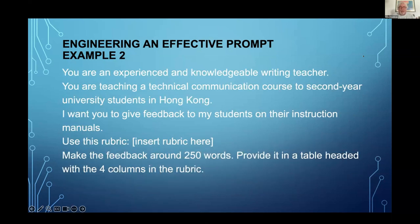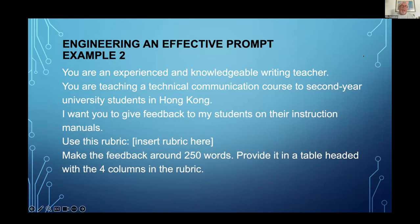Here's another prompt — I've taken out the role and context details. 'You are an experienced, knowledgeable writing teacher. You're teaching a technical communication course to second-year university students in Hong Kong. I want you to give feedback on their instruction manuals.' Here I've inserted a rubric rather than typing out what I wanted feedback on. This is often done also when we're asking AI to grade an assignment, not just give feedback. Insert the rubric, make the feedback around 250 words, and provide it in a table with the four columns from the rubric.